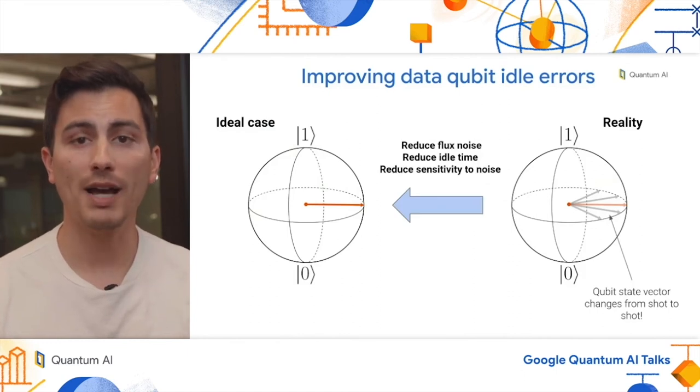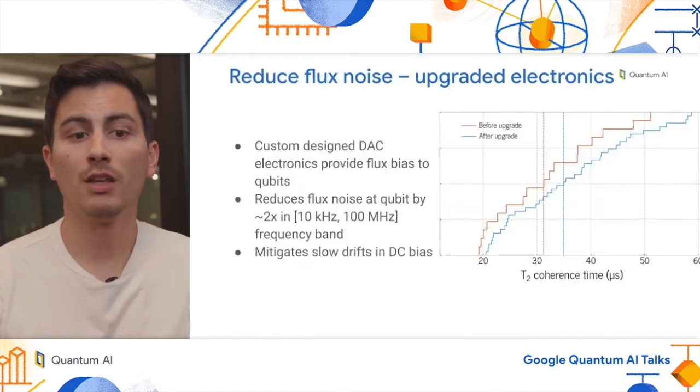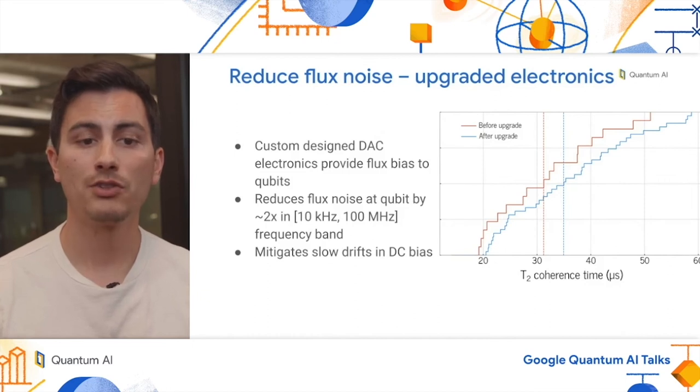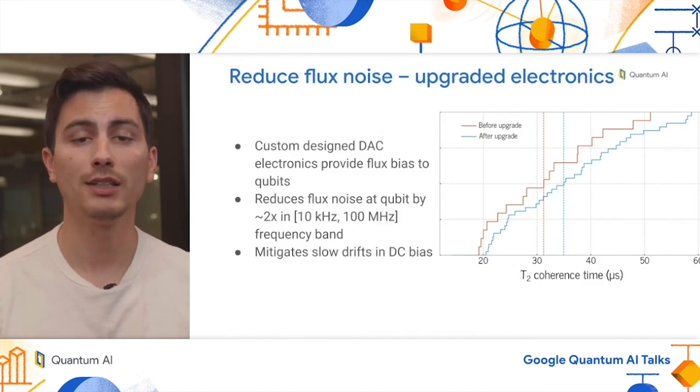So to move from reality back to the ideal case, we actually want to do three things. We want to reduce the flux noise of the qubit, we want to reduce the idle time, and we want to reduce our sensitivity to noise. So in order to reduce the flux noise of the qubit, we actually performed an electronics upgrade. In particular, we have a new custom designed DAC, which provides the flux bias to the qubit. This new DAC reduces the flux noise of the qubit by around 2x in the 10kHz to 100MHz frequency band, and additionally mitigates slow drifts in the DC bias. We measure the T2 coherence time of all of our qubits, before and after this upgrade, and saw a 15% improvement in T2 with the new DACs.